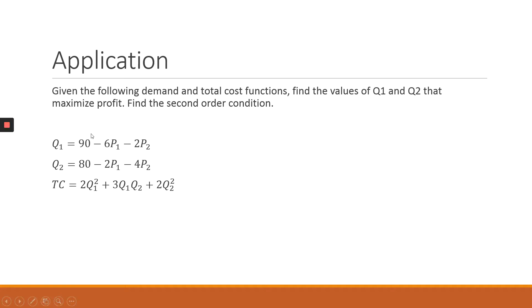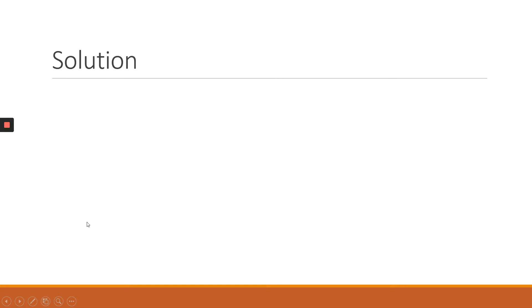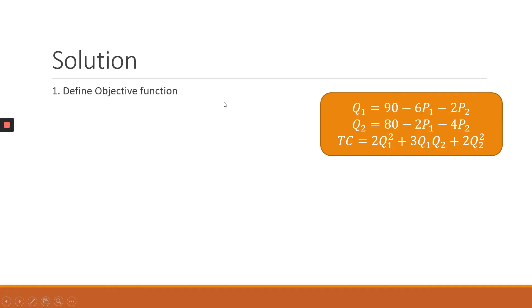From the given information, we have a demand function for q1, a demand function for q2, as well as a total cost function. To solve this, the first thing we need to do is define the objective function, which is basically our profit function.